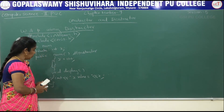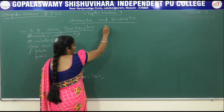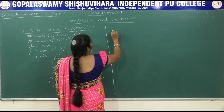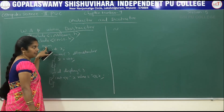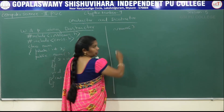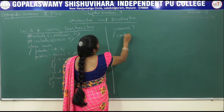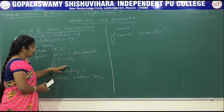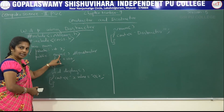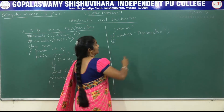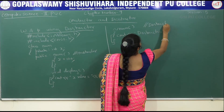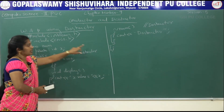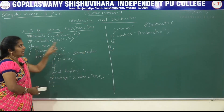After displaying the value, I am going to call the Destructor function. To write the Destructor, use the tilde operator followed by the class name: '~num()'. Inside, display the message 'Destructor'. Close this function. In this program we have three functions: the Constructor function, the regular display function, and the Destructor function. Then close the class with a flower bracket and semicolon.